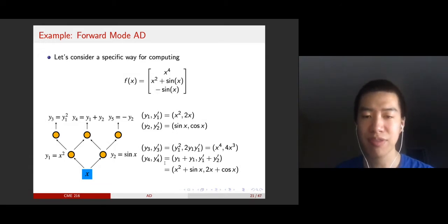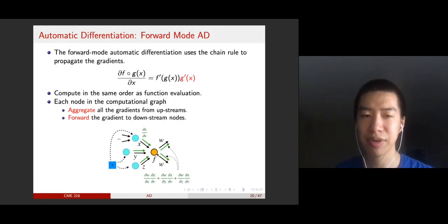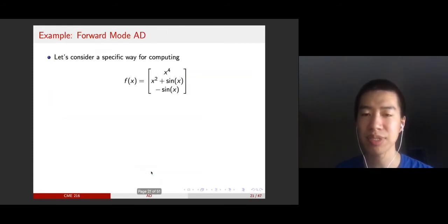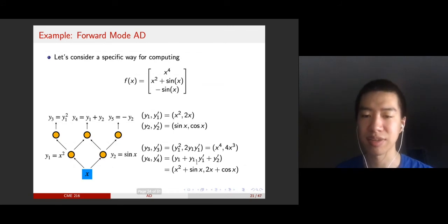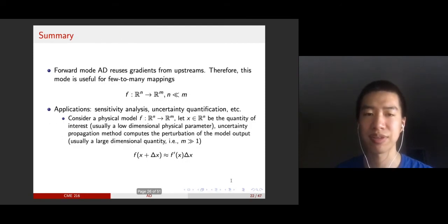You also have y₄. This is similar, but y₄ has two upstreams. So it applies the chain rule, aggregates all the gradients from upstreams, and calculates the gradients it should propagate to downstreams. Finally, you have y₄ and y₅.